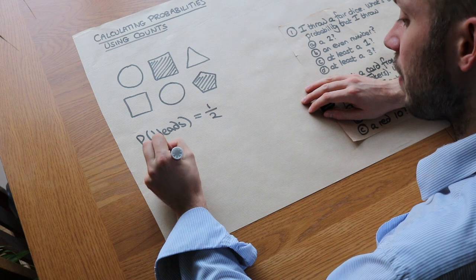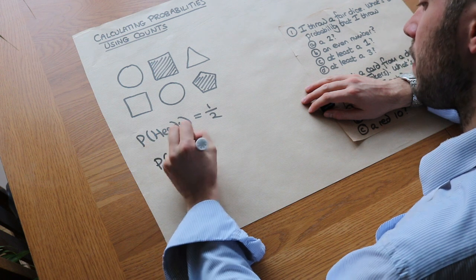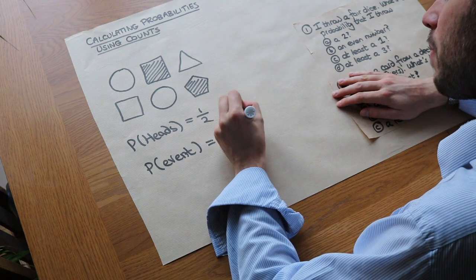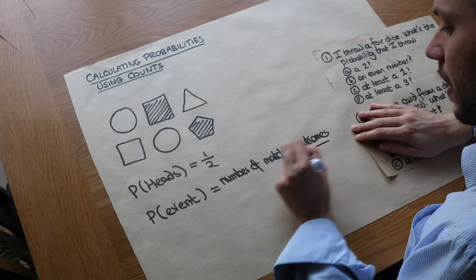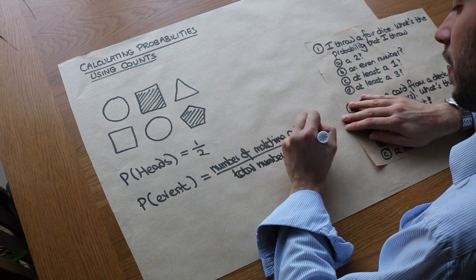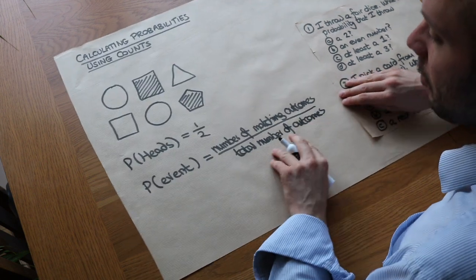So the probability of something happening, some event happening, is equal to the number of matching outcomes divided by the total number of outcomes. And this hopefully should become clearer when we do a particular example.